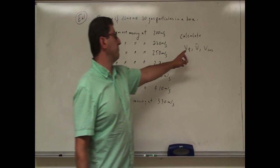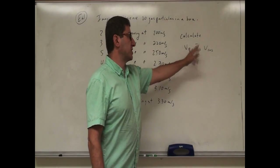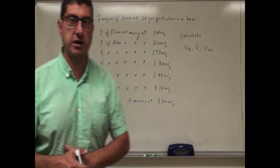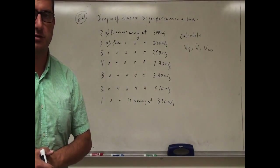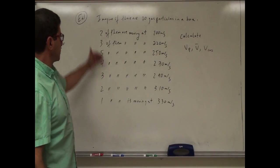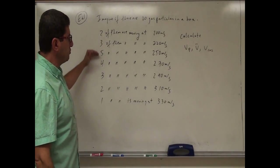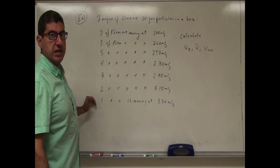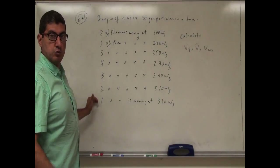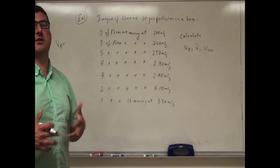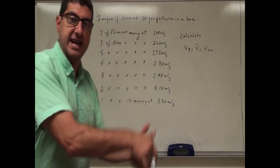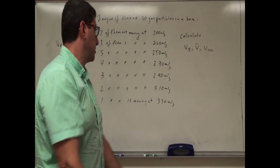What is the most probable speed? What's the average speed? And what's the mean square speed of the particles? The most probable speed is the quickest to find. You basically look at the distribution of the gases and say: where is it peaking? Which speed has the most number of particles moving at it?